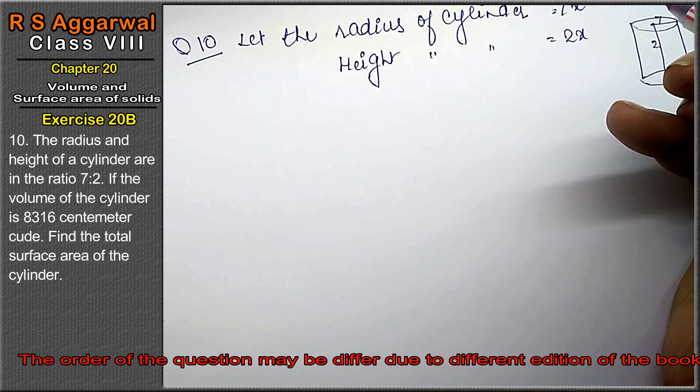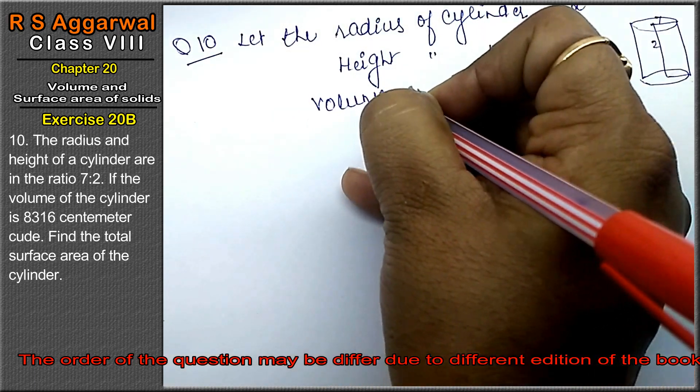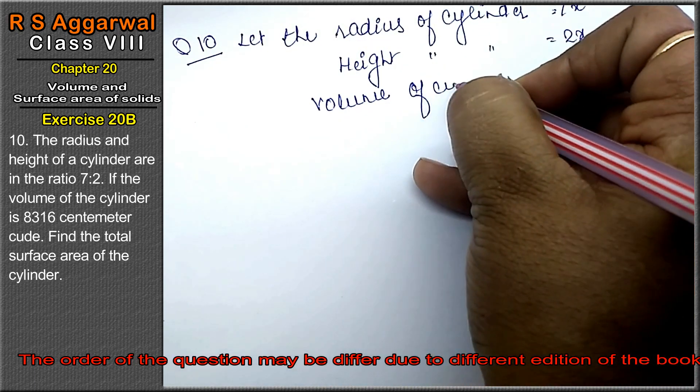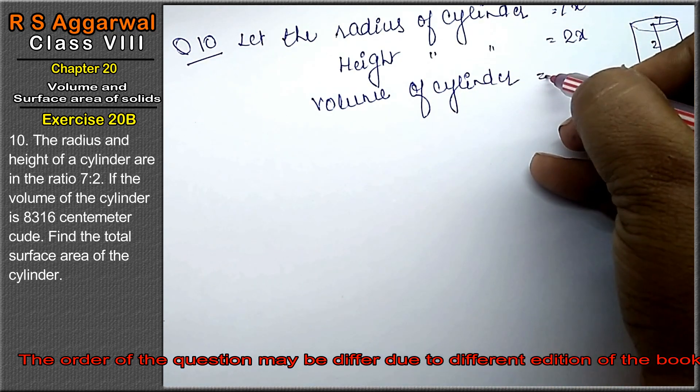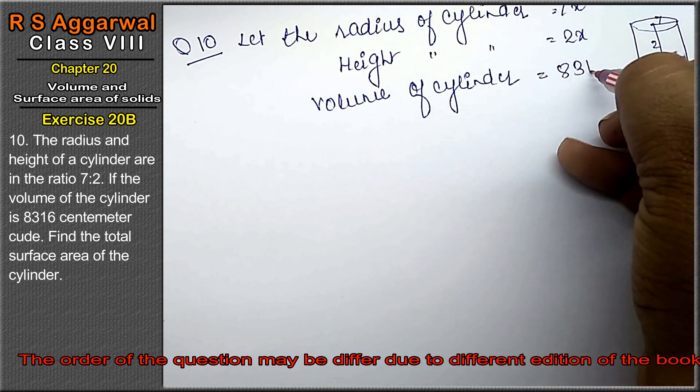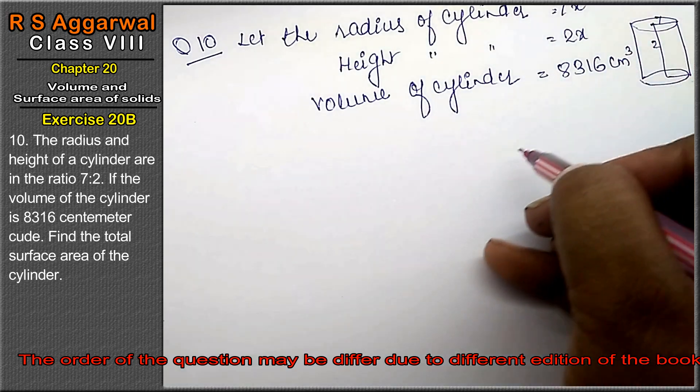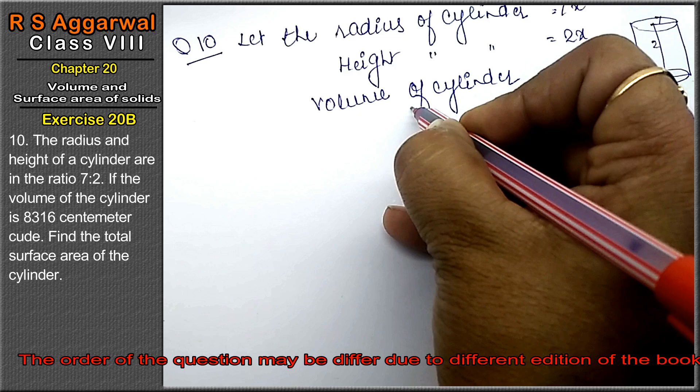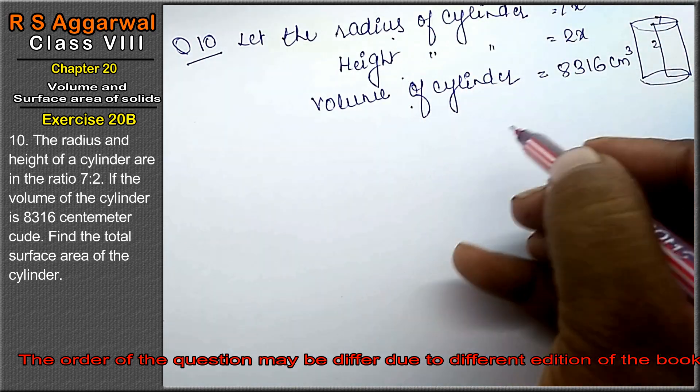Now, what is he saying? If the volume of cylinder is given to us, volume of cylinder equals to 8316 cm³, find the total surface area. Now friends, we have given volume, we have given height and radius in the ratio, right?